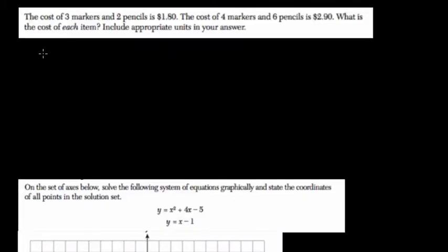Okay, so we're told here that the cost of three markers, 3m, and two pencils, 2p, is $1.80. We're also told the cost of four markers and six pencils is $2.90. What is the cost of each item?